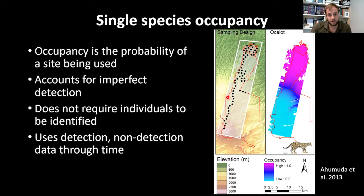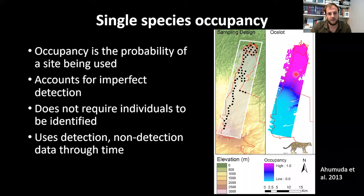A colleague's work provides a nice illustration of occupancy model potential: using camera traps across an elevation gradient, they showed ocelots avoided low-elevation areas and strongly preferred high-elevation areas, with an occupancy value approaching one — meaning you're almost certain to find them at the top of that range.